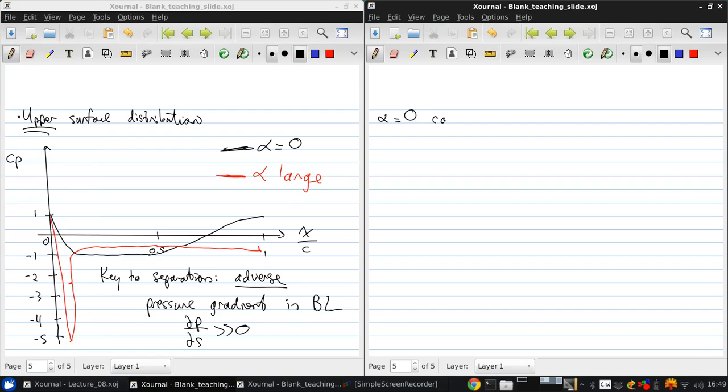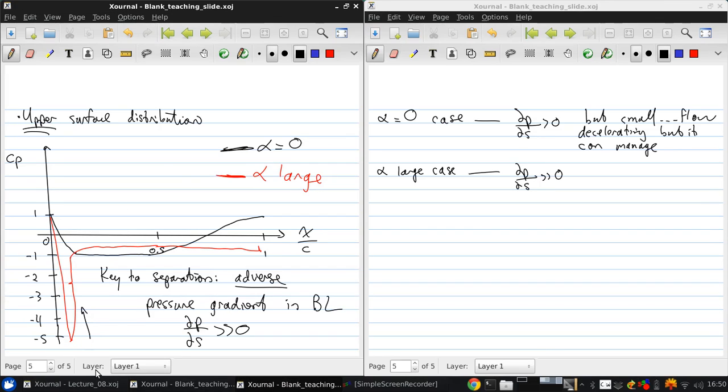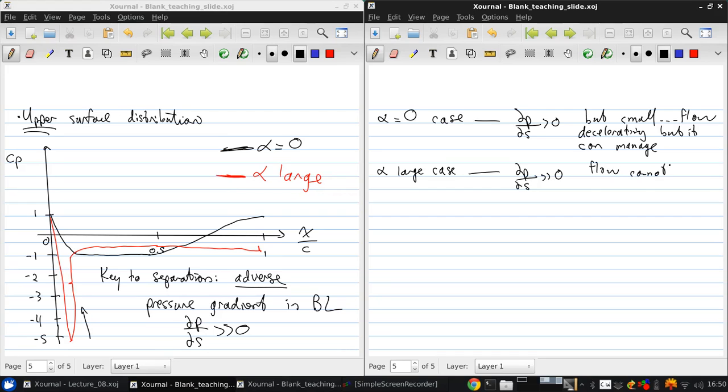For the alpha equals zero case, dpds is positive generally, at least on the back half of the airfoil, but it's small. The slope of this line is not too great. The flow is decelerating, but it can manage. Whereas for the alpha large case, dpds in this region is very large, and so the flow just cannot cope in the boundary layer, and so it separates instead.